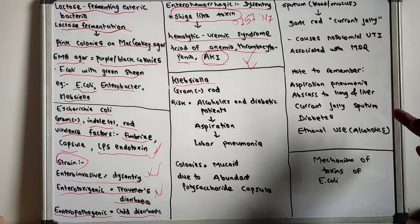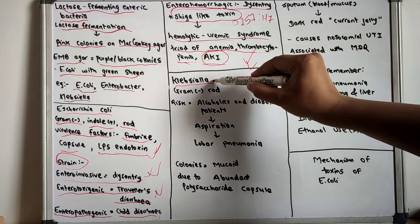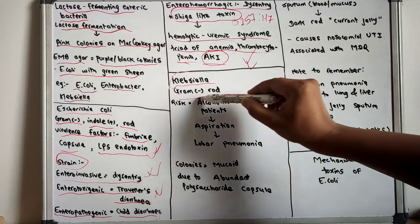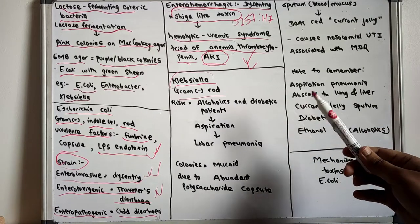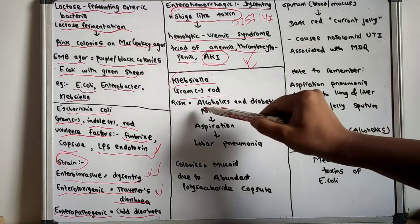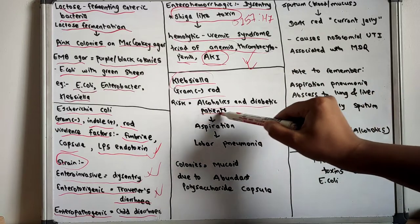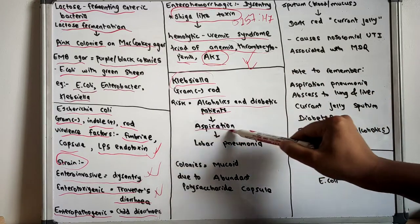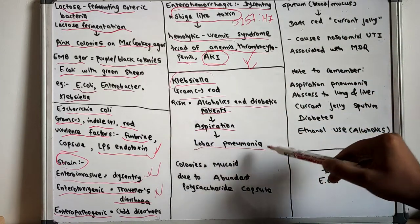Now let us talk about the Klebsiella species. Klebsiella are gram-negative rods. Mainly the risk of acquiring infection of Klebsiella occurs in alcoholics and diabetic patients. Because of aspiration, there can occur lobar pneumonia.